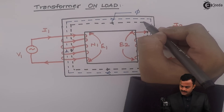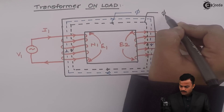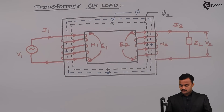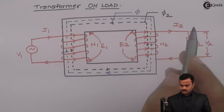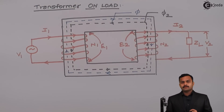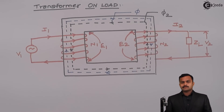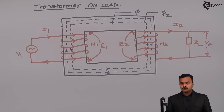The direction is upward, which means it is opposite to the main flux. I will represent this flux as phi2, because it is produced by I2. Now what is the problem? Inside the core there will be a reduction of flux, and the equivalent flux in the core is phi minus phi2.